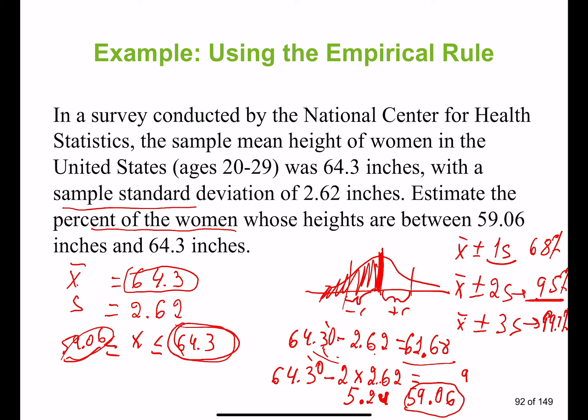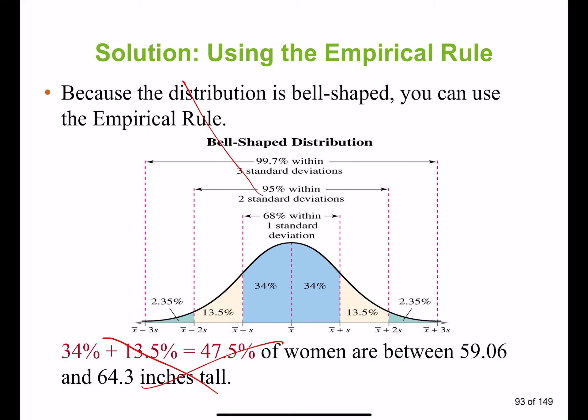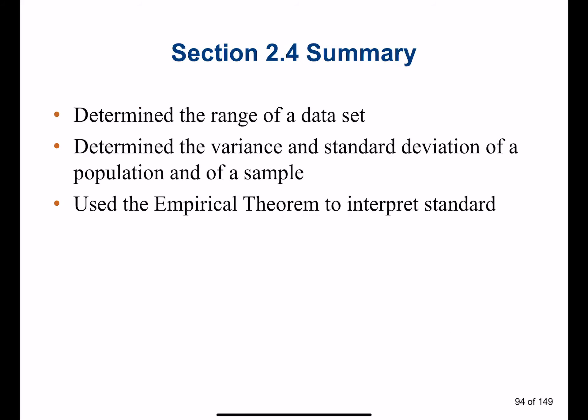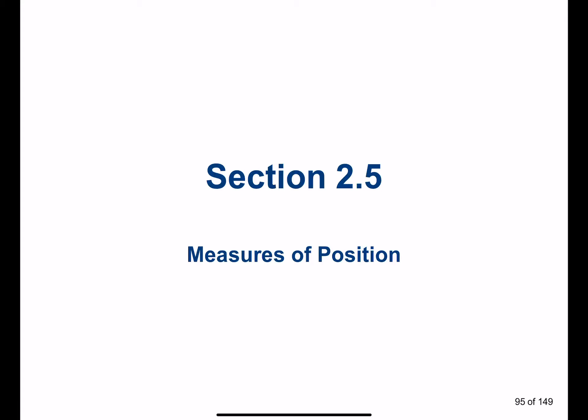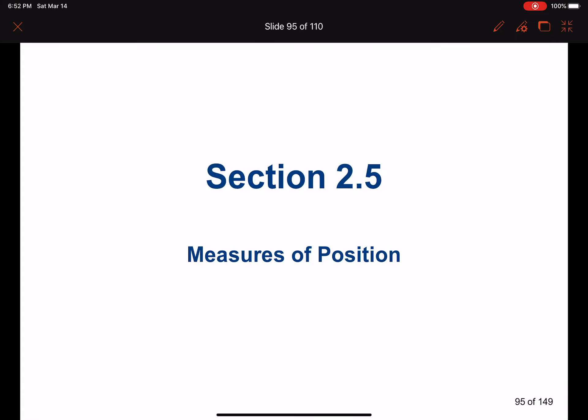To summarize, we covered range, variance, standard deviation of the population and sample, and the empirical rule. This concludes section 2.4.